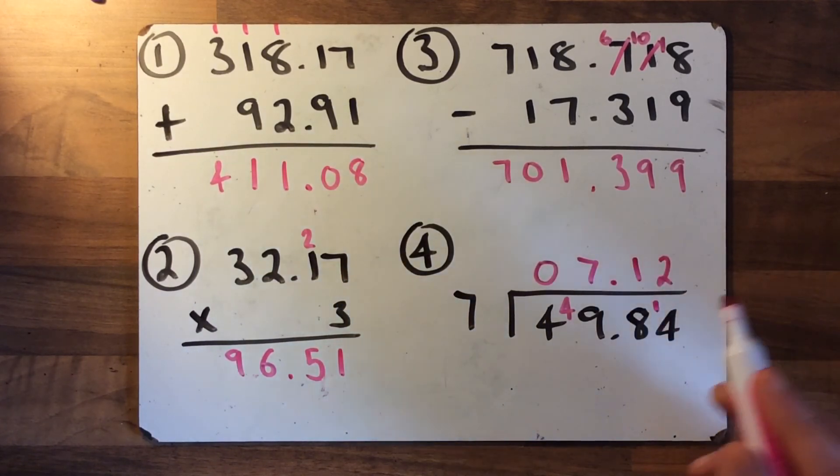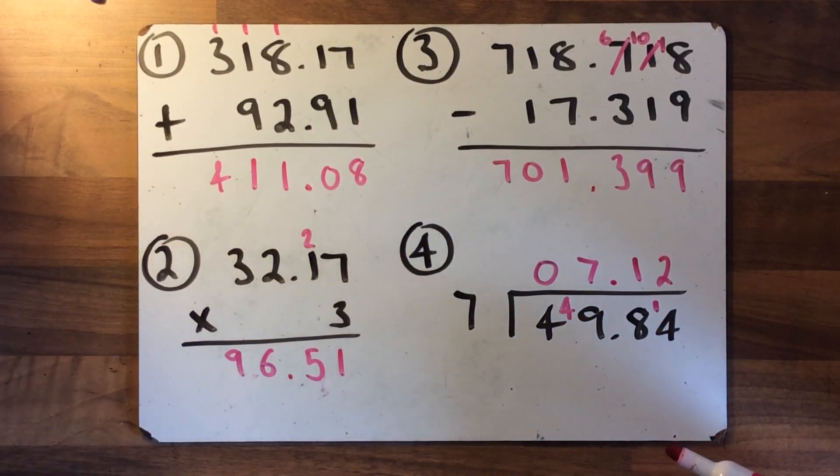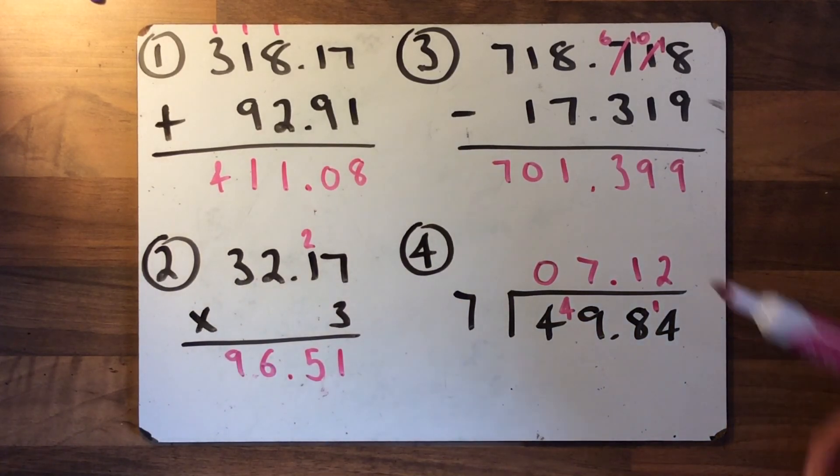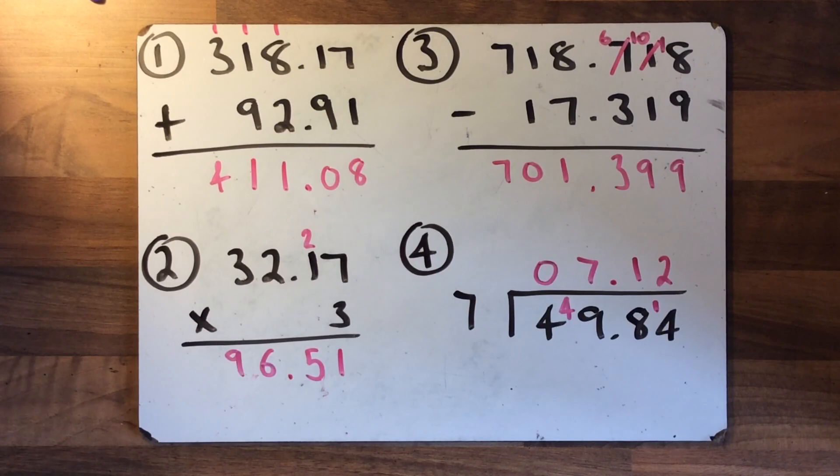Hopefully you got all those right, Year 6. It's really important remembering with decimals—like golden rule of decimals—lining them all up, and you can see we have, and that's why we've got four correct answers.